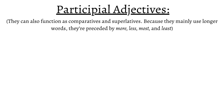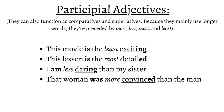At last, participial adjectives can also function as comparatives and superlatives, but because they use longer words, they're preceded by "more", "less", "most", and "least". Some examples are: "This movie is the least exciting." "This lesson is the most detailed." "I am less daring than my sister." "That woman was more convinced than the man."